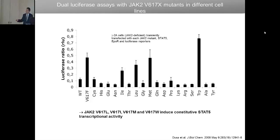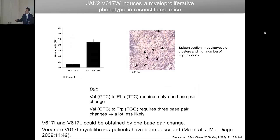We have worked quite hard on the mechanism of activation by this mutation. Not only phenylalanine activates JAK2 in transcriptional assays on STAT5, but also tryptophan, isoleucine, leucine, and methionine. So there are four mutations that can activate at that position — most patients have V617F, but recently some myelofibrosis patients have been identified with other mutations at this position, and one germline mutation has been published in the New England Journal of Medicine. The tryptophan mutation is very strong — in mice at 45 days there is a high hematocrit and a picture of myelofibrosis in the marrow with megakaryocyte clusters.